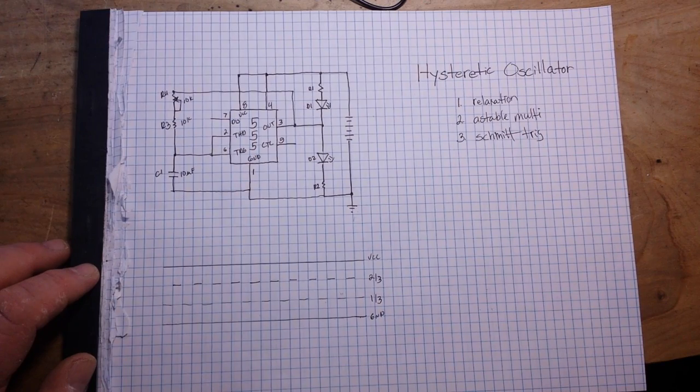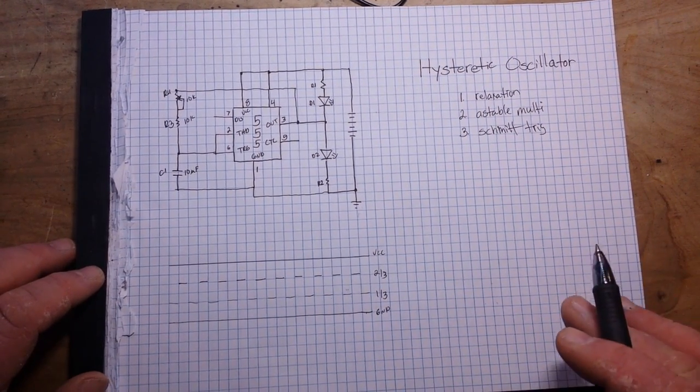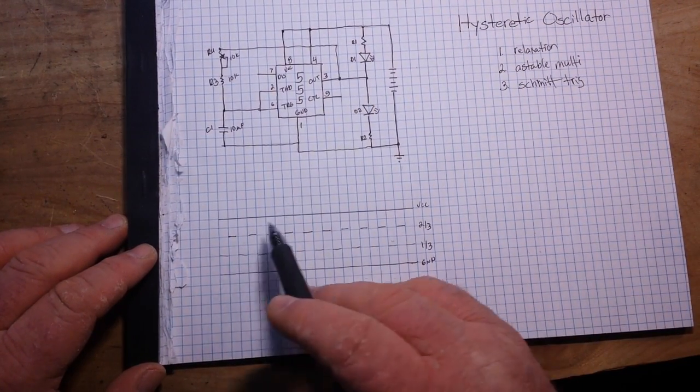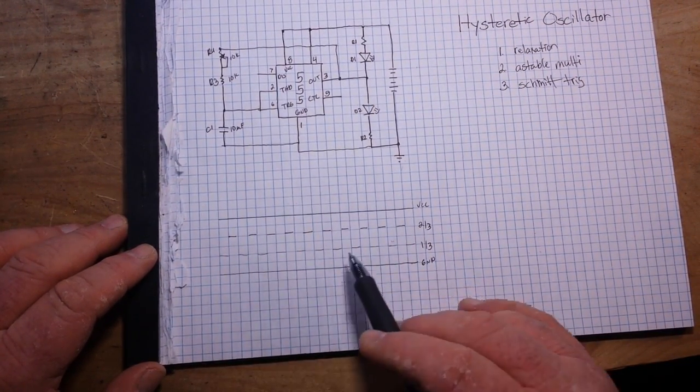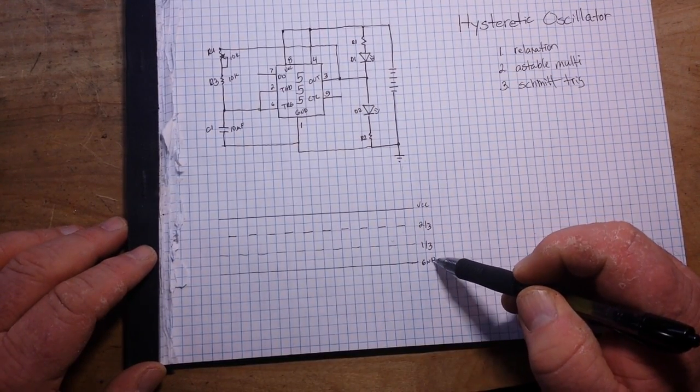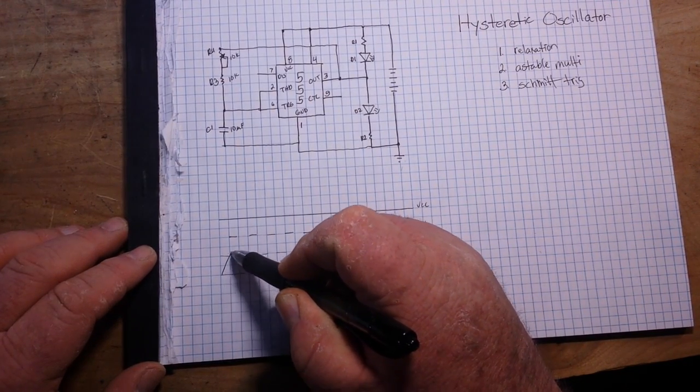So it is all of these things rolled into one. Now, why is it a Schmitt trigger? Well, let's take a look down here. Pretend this is our oscilloscope. Here's VCC, here's ground, here's one-third, here's two-thirds.